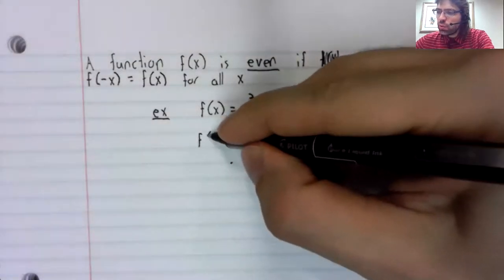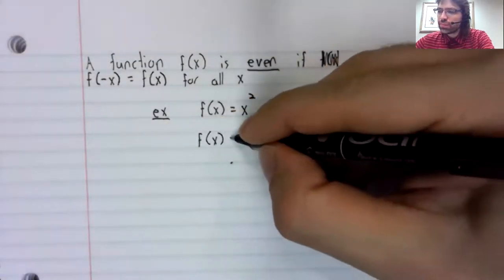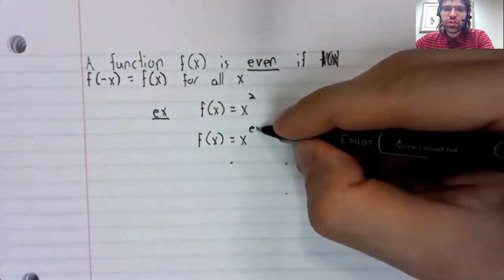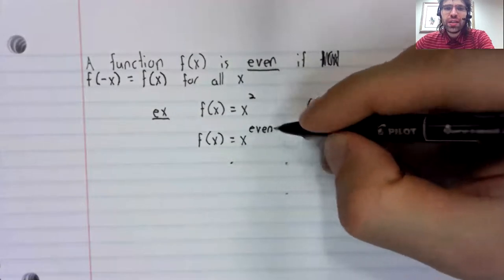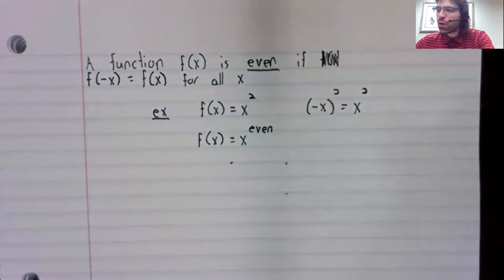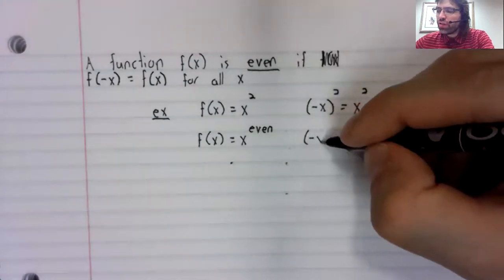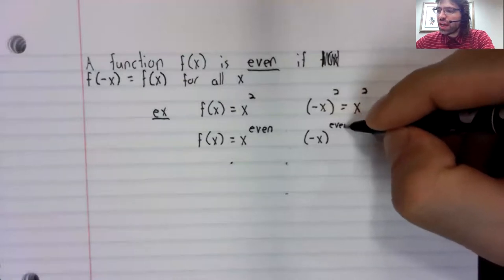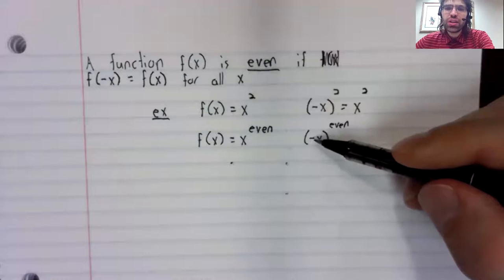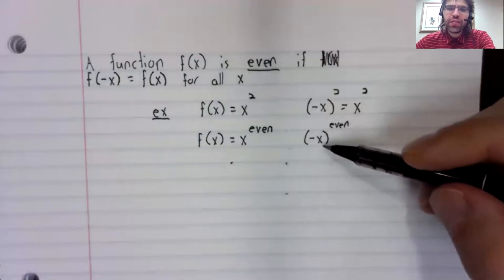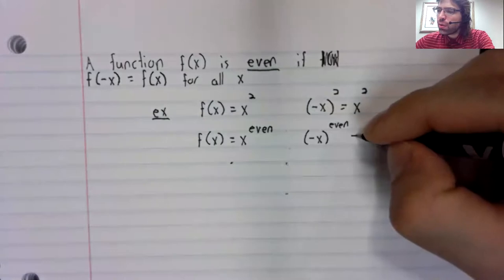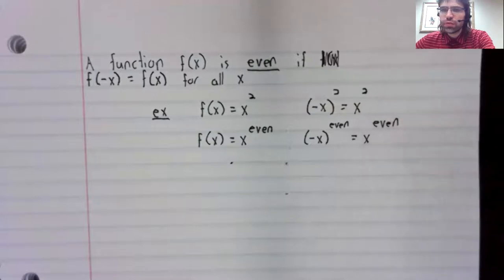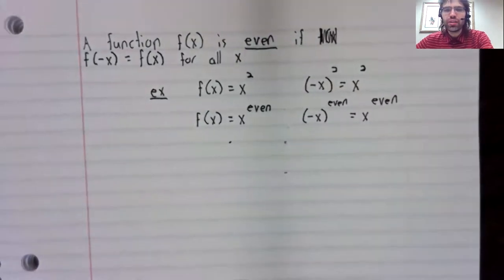And more generally, f(x) equals x raised to any even power is an even function, because this even power gets rid of the negative sign. Negative x to an even power is the same as x raised to an even power.